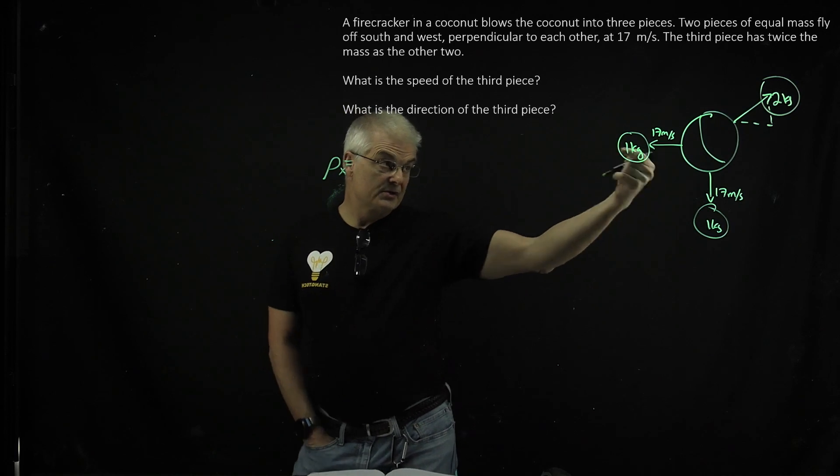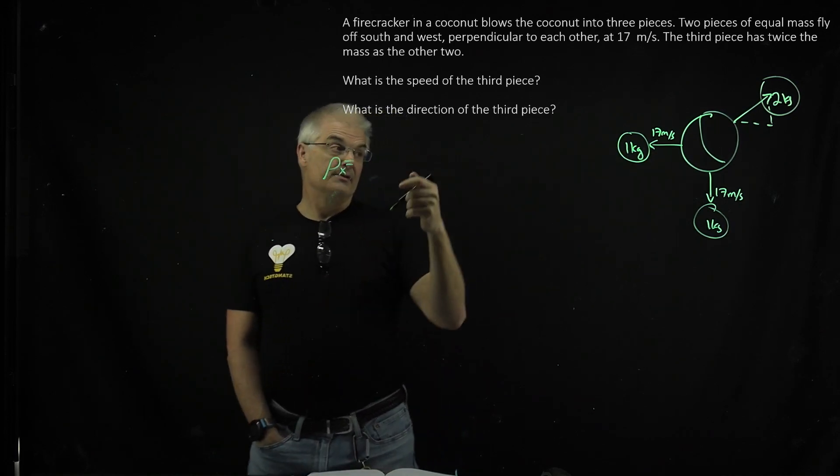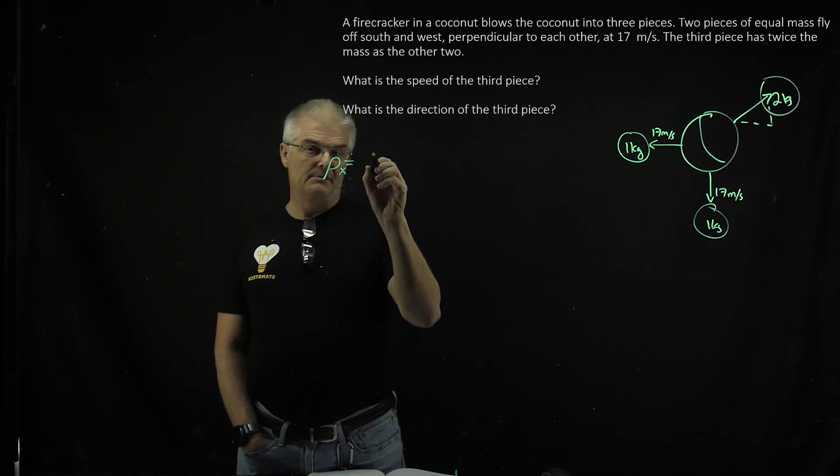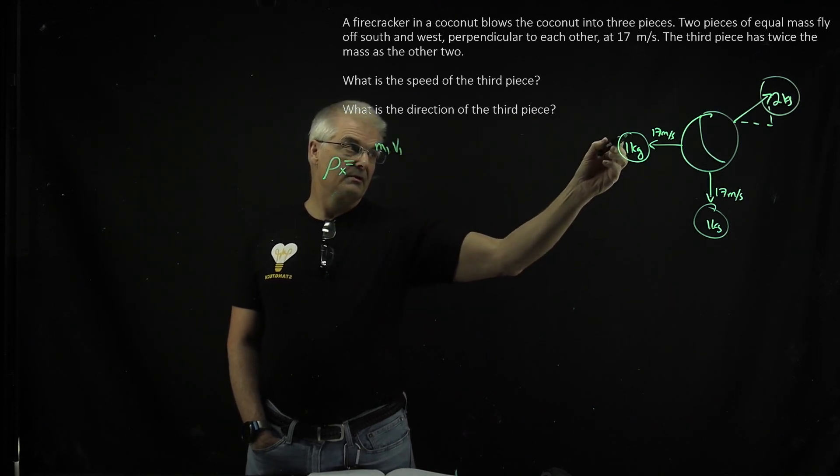So in the x direction, now notice this is going in the negative direction. So it has to equal, so that's going to say, and remember it's m1, mv1 or whatever, this is piece number one.